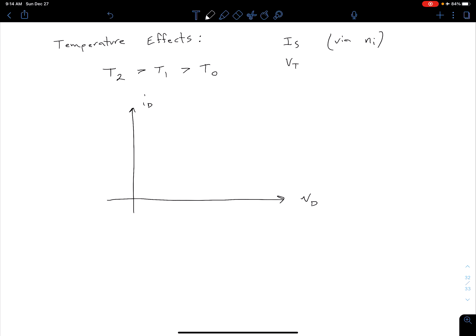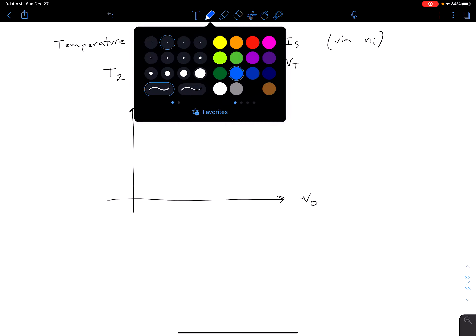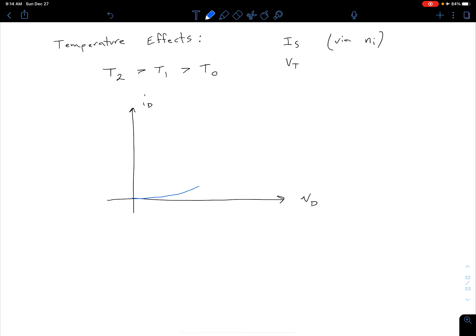We have some curve for the forward region that corresponds to our temperature T0. If we increase the temperature to T1, we actually reduce the voltage required to start having that exponential increase kick in. If we increase it even more, we're shifting that curve even further to the left.